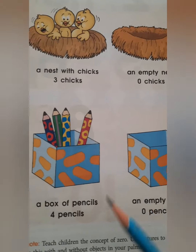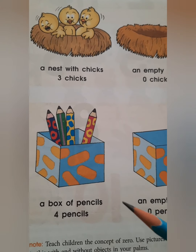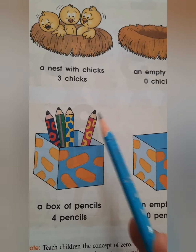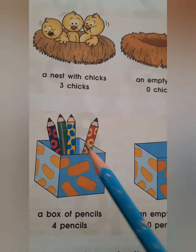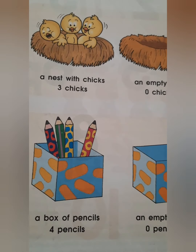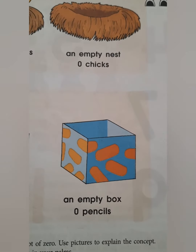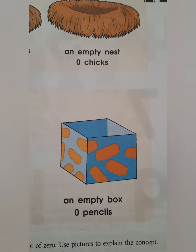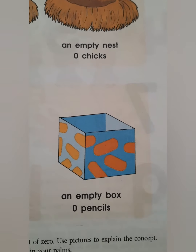Now look at this example. A box of four pencils. Count these pencils — one, two, three and four. To is box mein kitni pencils hain? Four. If I ask how many pencils are in this box, hum bata sakte hain na ki four pencils. Now look at the other box — it is an empty box. Yeh khali hai aur yahan par koi bhi pencil nahi hain. To hum kya bolenge? Zero pencils.